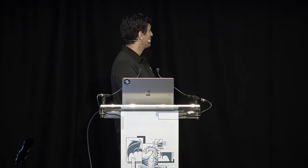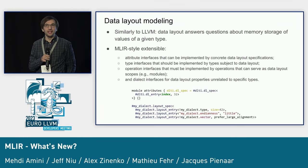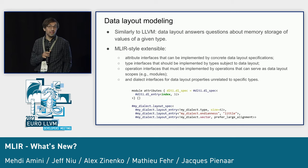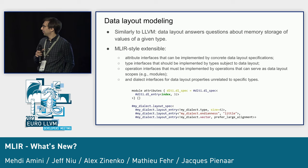Moving on to data layout — this is necessary to connect to LLVM and target a wide range of targets. LLVM has a data layout representation at the top of the module, but it doesn't work for MLIR because MLIR does not have a fixed set of types. What is the data layout of an index, a tensor, or a custom type in your dialect? So we built a really extensible data layout and target information subsystem where you can parameterize whatever layout properties you want for your type.